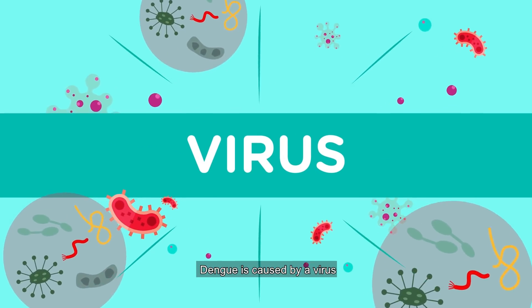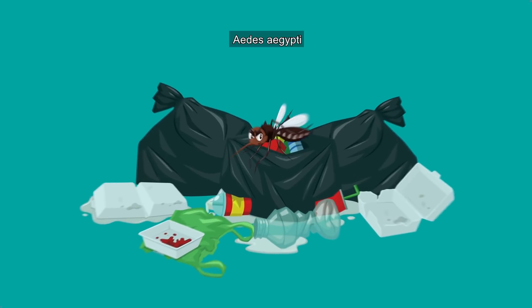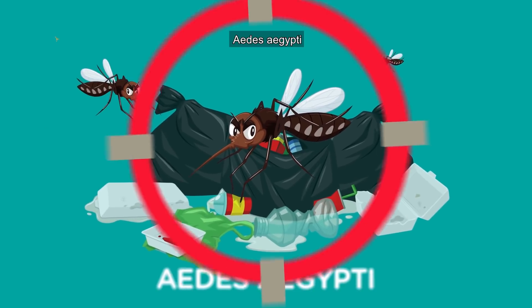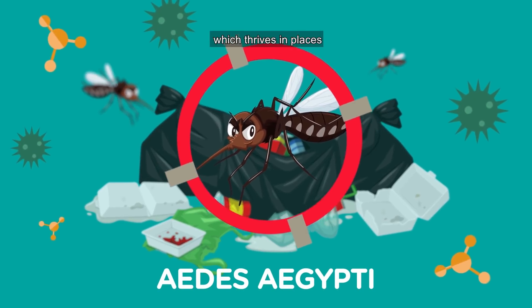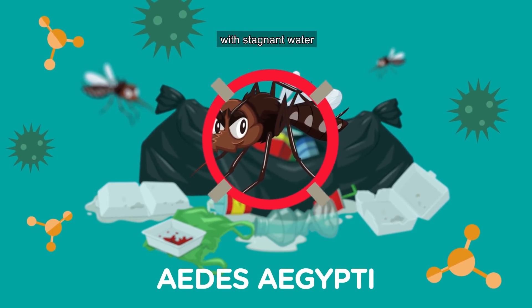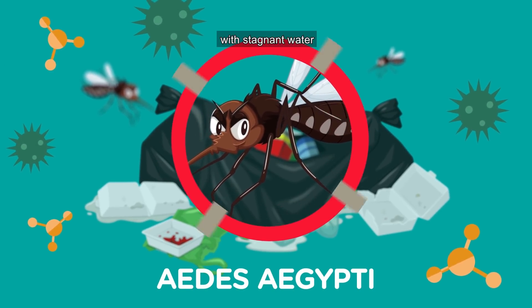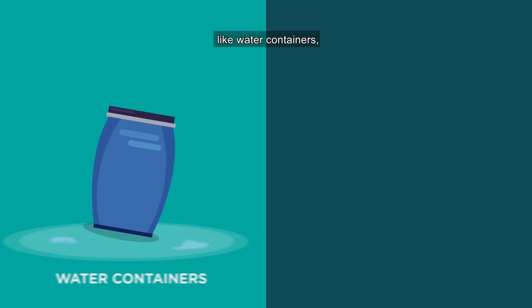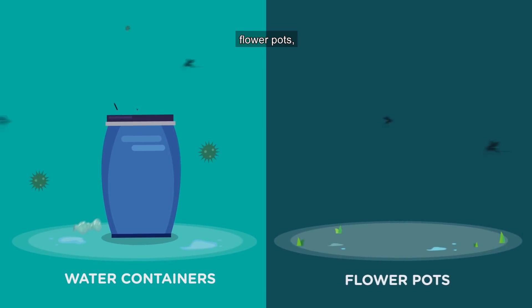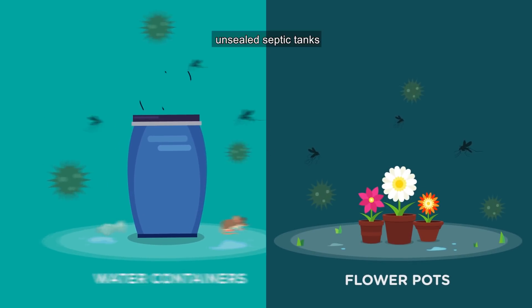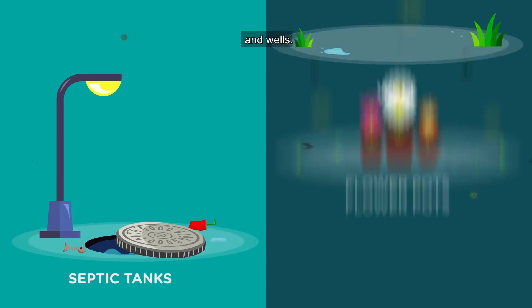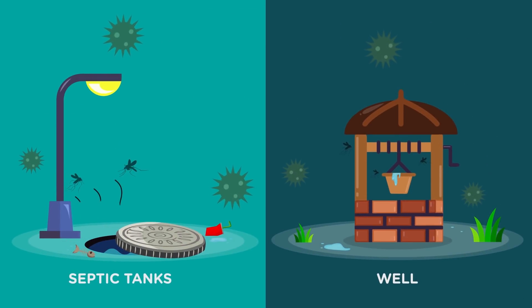Dengue is caused by a virus spread by the female mosquito Aedes aegypti, which thrives in places with stagnant water like water containers, flower pots, unsealed septic tanks, and wells.